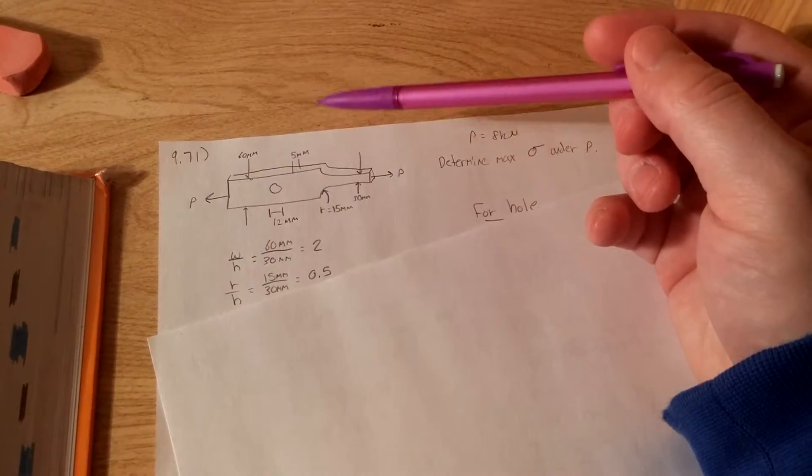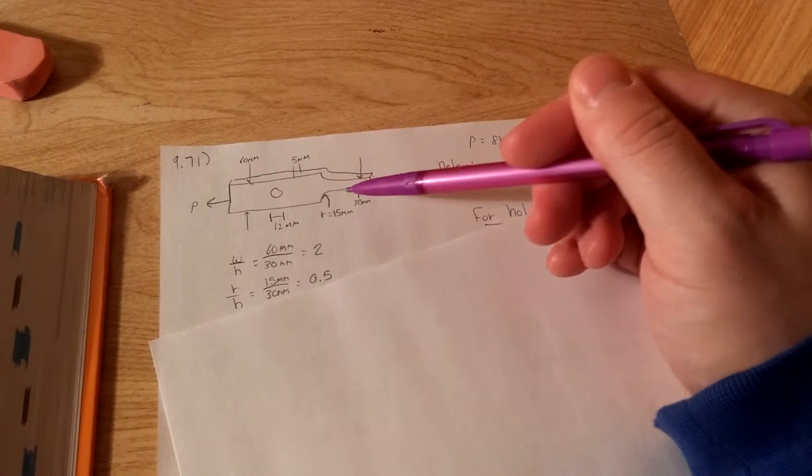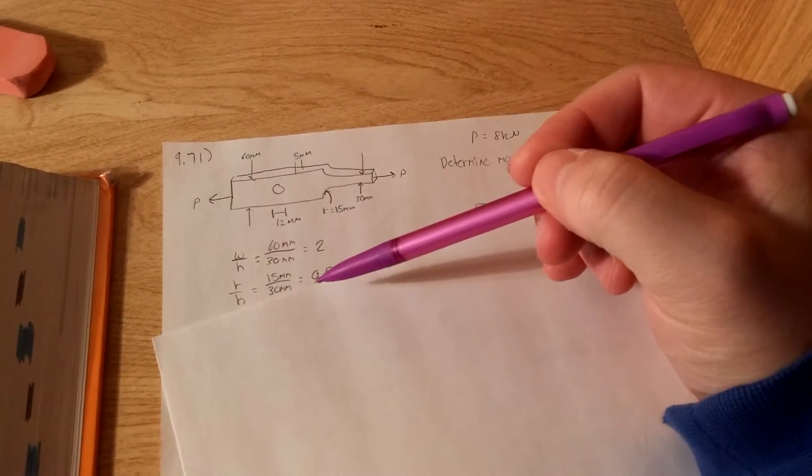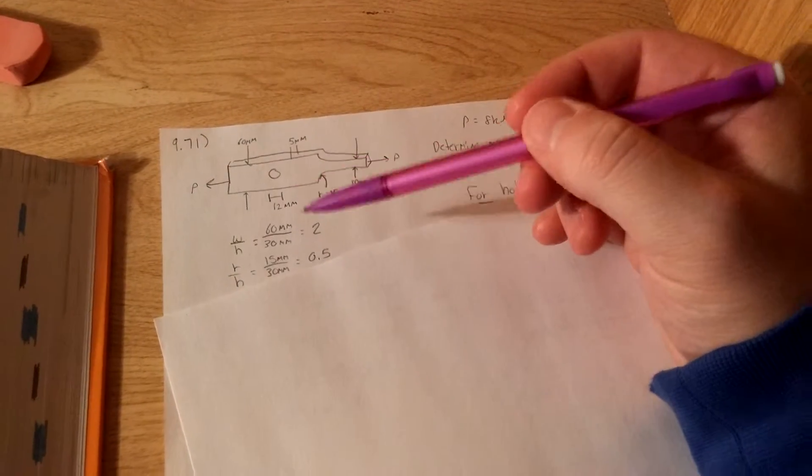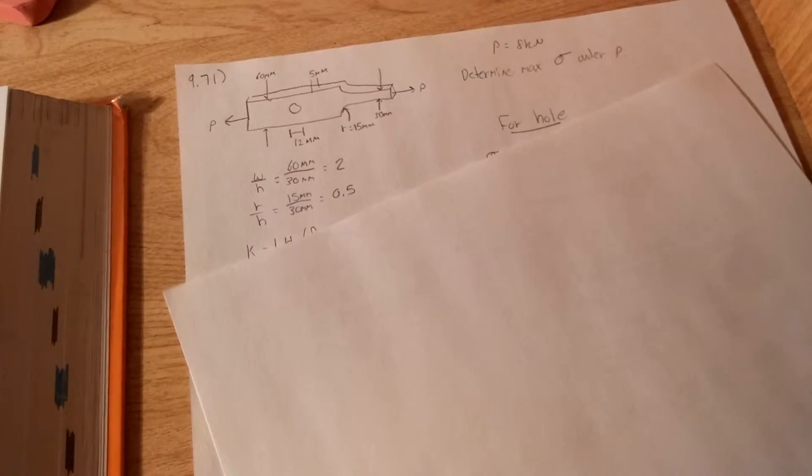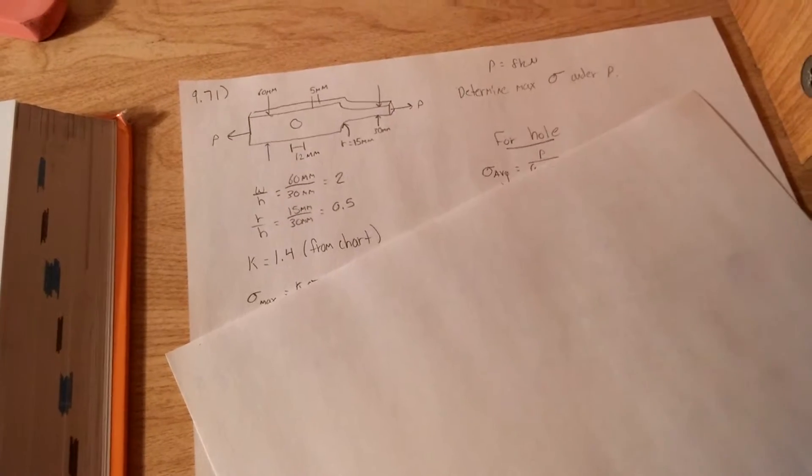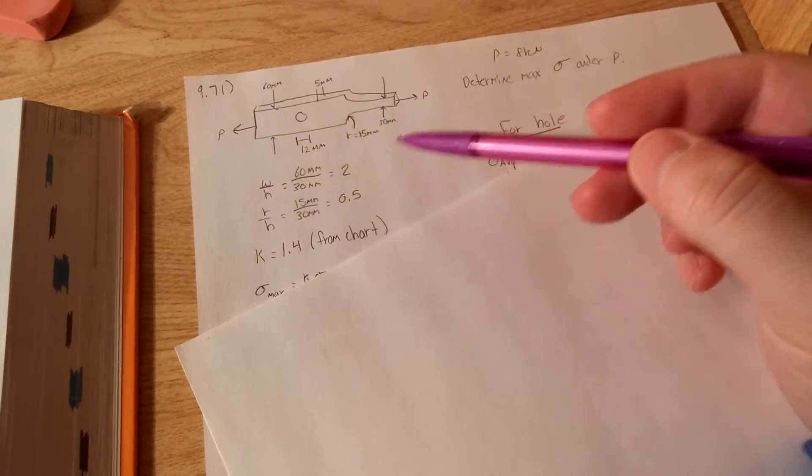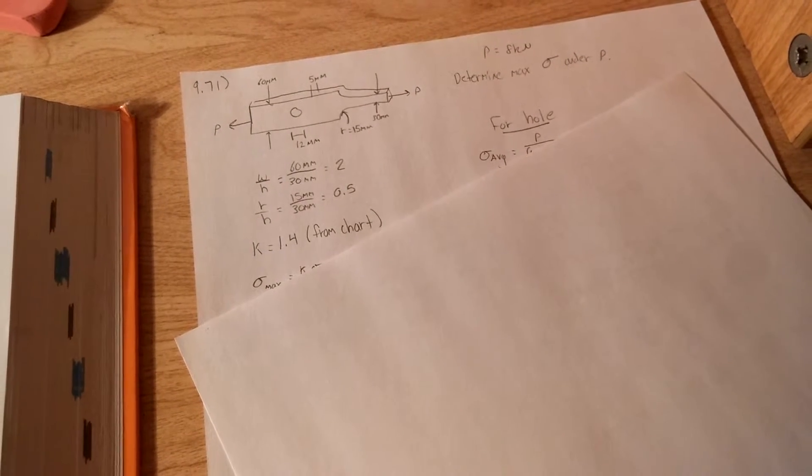And then we have to find R over H value, and they give you the value for R. It's 15, and then H, once again, is 30, so it's 1 half. And so when you look on the graph, the W over H of 2 and the R over H of 1 half, you get your K value is actually 1.4, and that's from the chart they give you.